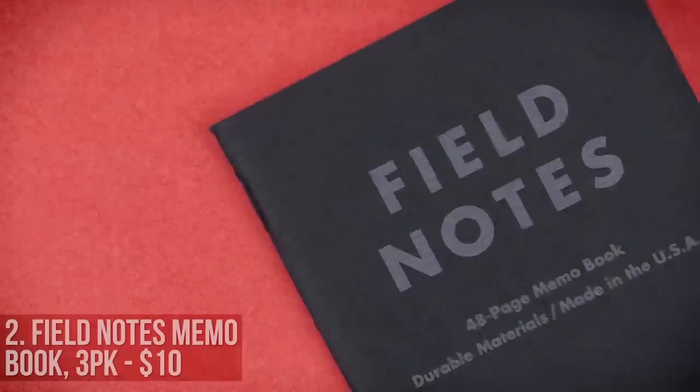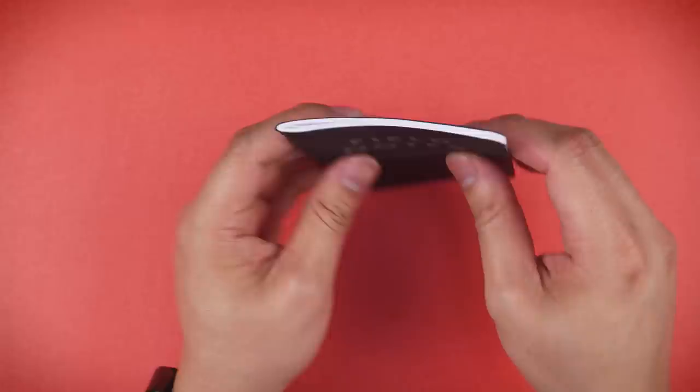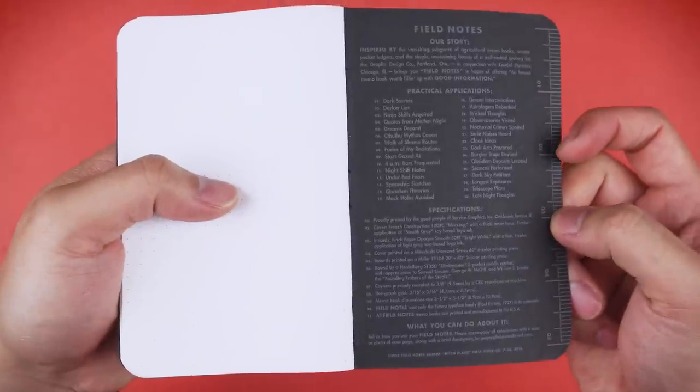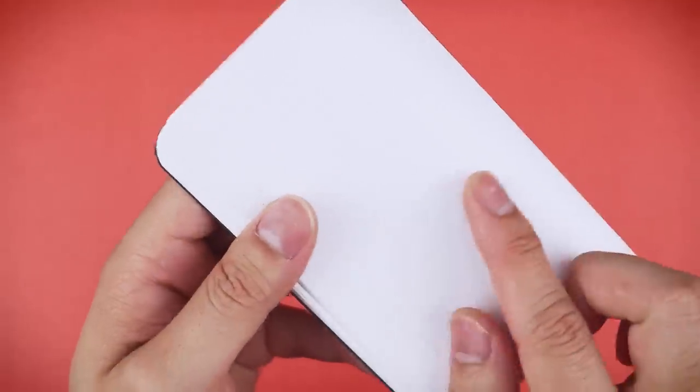A set of Field Notes memo books are my favorite notebooks to carry on the go. They're thin, have enough pages to last you a while without bulking up, and fairly durable with a stiff cover. I personally prefer the grid as it allows me to draw, but also line up to write as well. The best of both worlds.